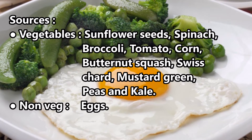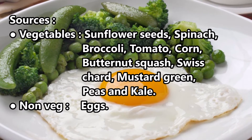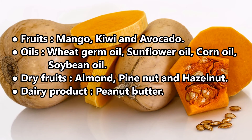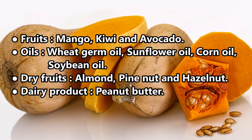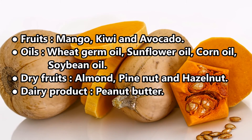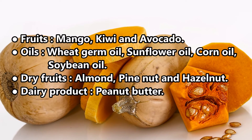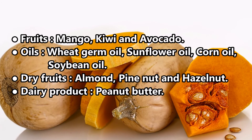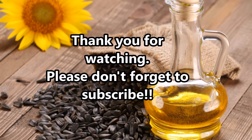Sources of Vitamin E. Vegetables: sunflower seeds, spinach, broccoli, tomato, corn, butternut squash, Swiss chard, mustard greens, peas, kale. Non-veg: eggs. Fruits: mango, kiwi, and avocado. Oils: wheat germ oil, sunflower oil, corn oil, soybean oil. Dry fruits: almonds, pine nuts, and hazelnuts. Dairy products: peanut butter. Thank you for watching, please don't forget to subscribe.